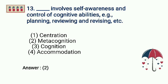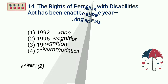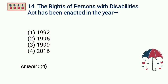Question 13: Dash involves self-awareness and control of cognitive abilities, e.g. planning, reviewing, and revising. Options: Centration, Metacognition, Cognition, Accommodation. Answer: Metacognition.